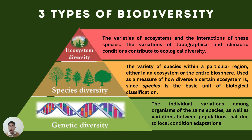Moving on, we have ecosystem diversity. This refers to varieties of ecosystems and the interactions of species in their ecosystem. Variations of topographical and climatic conditions contribute to ecological diversity. There are many differences in the type of organisms found in a specific ecosystem — for example, in the desert, organisms have different types of adaptations because organisms tend to adapt to their ecosystem's conditions.